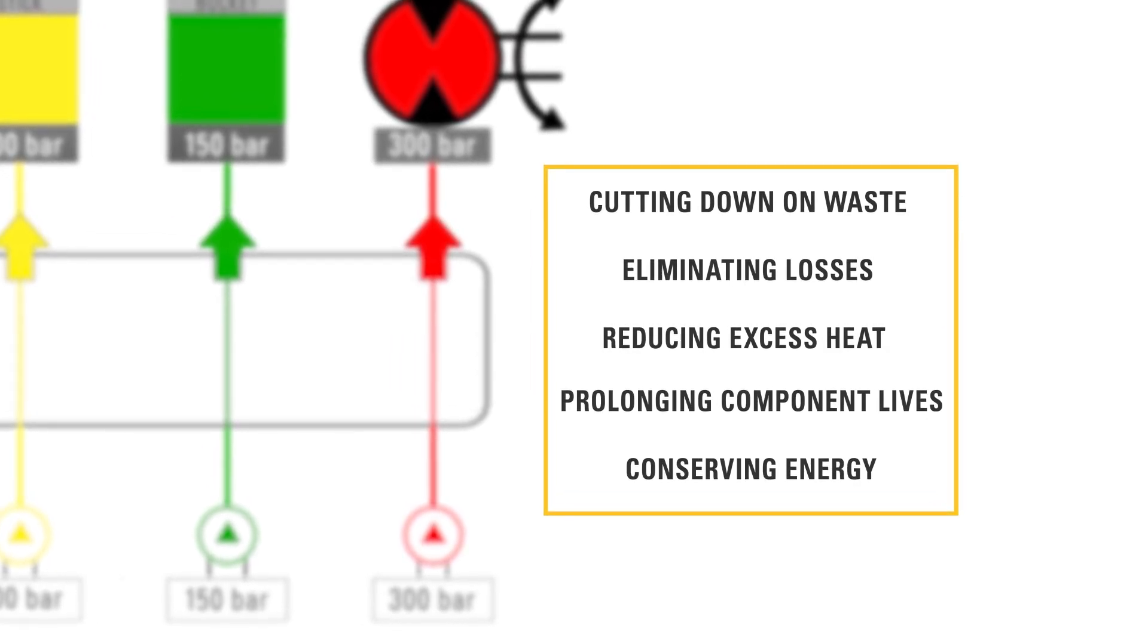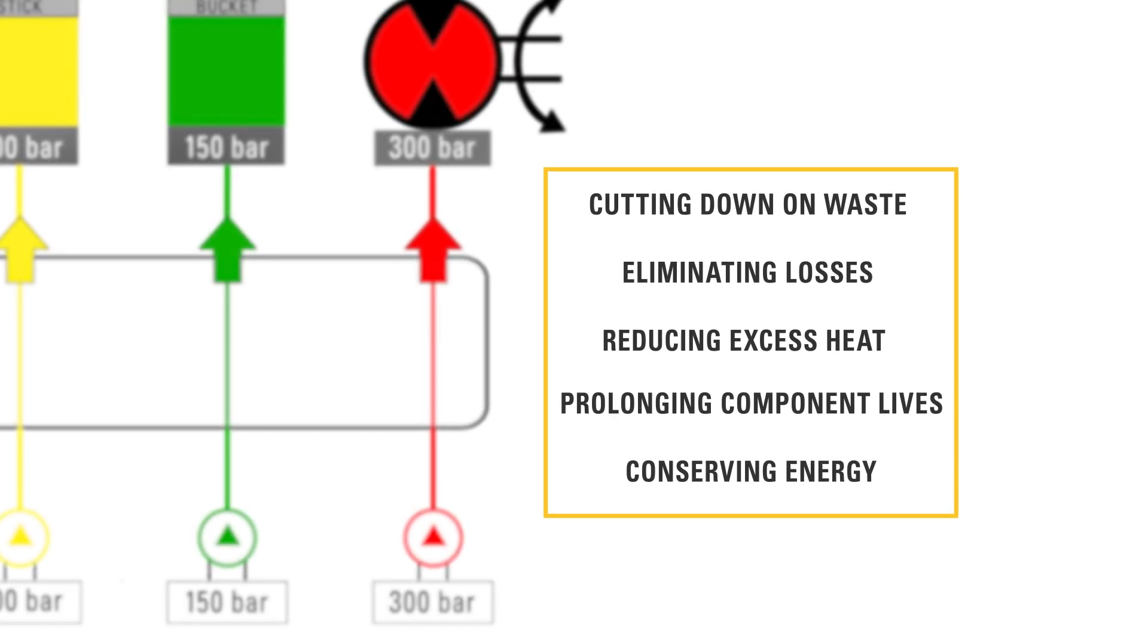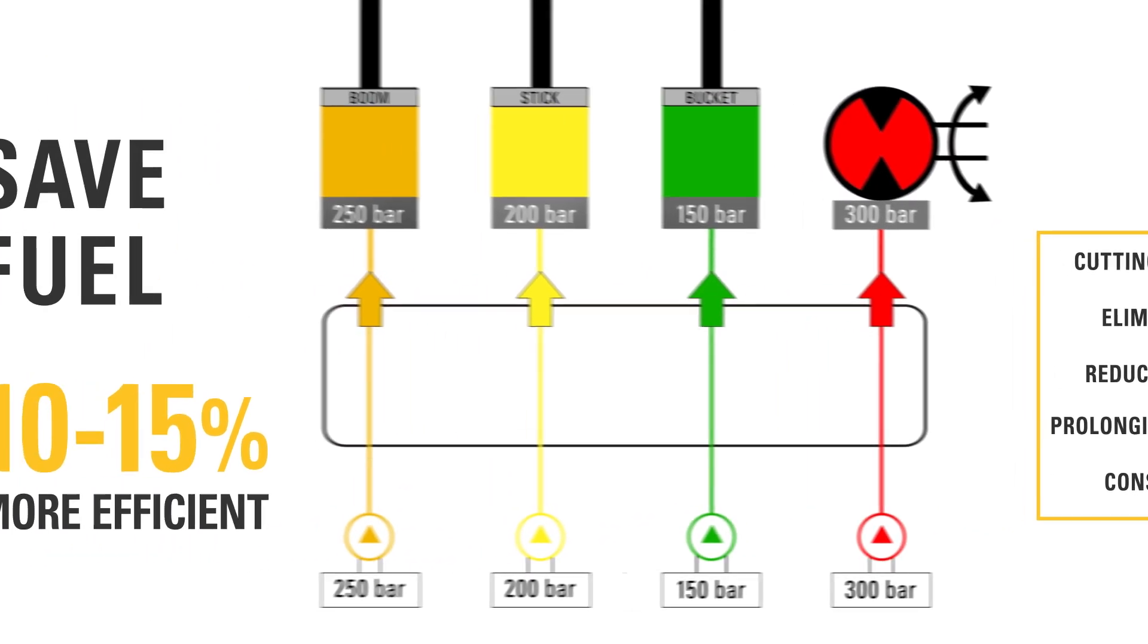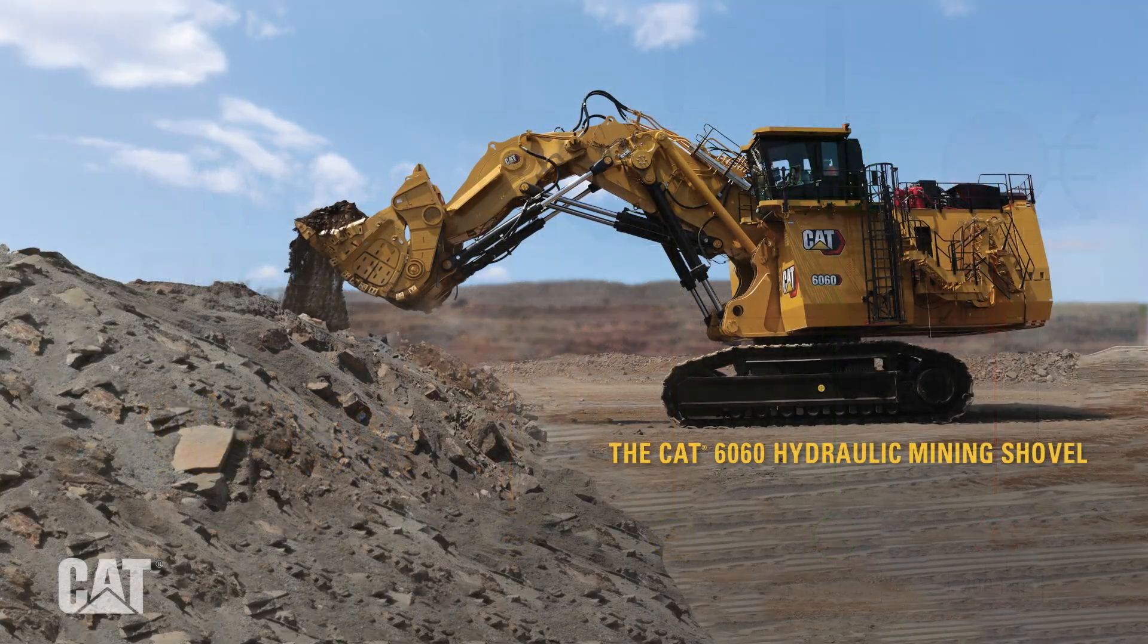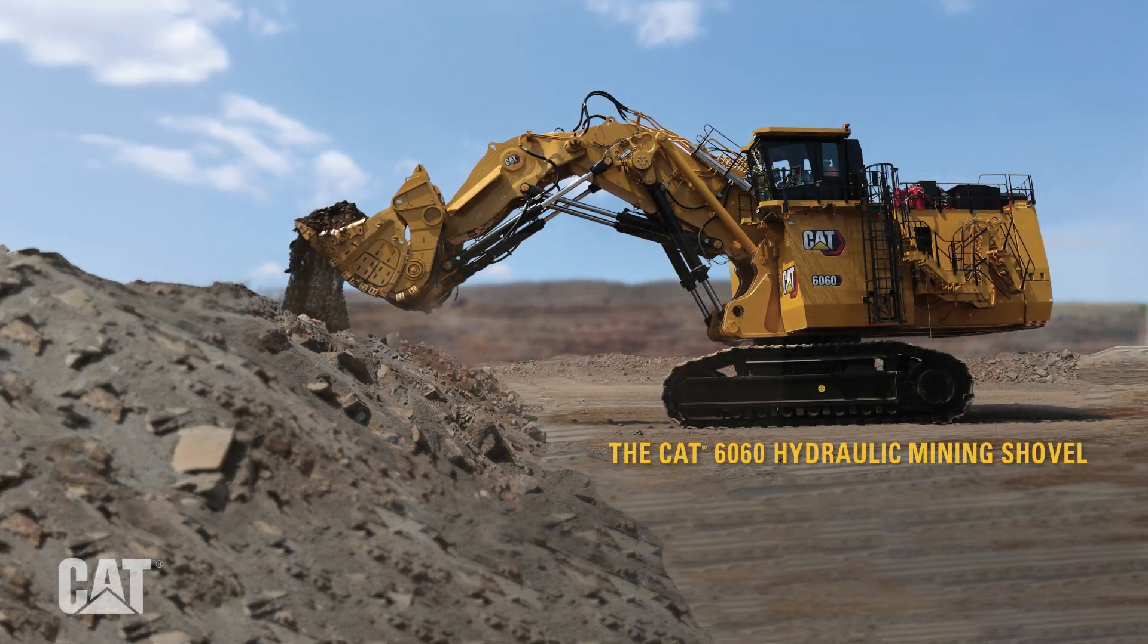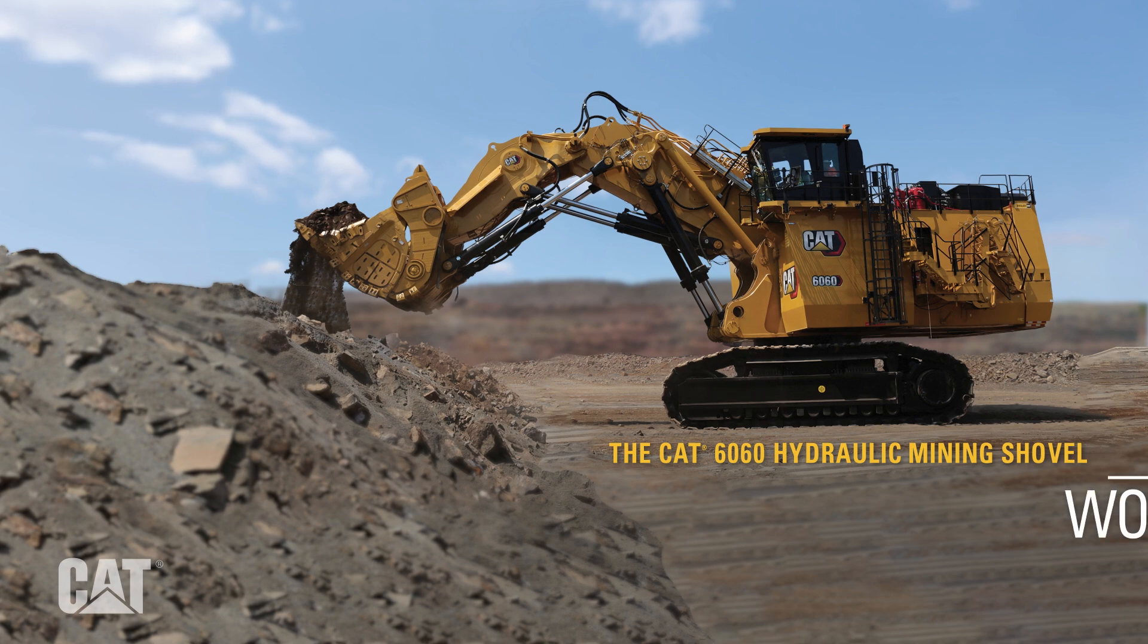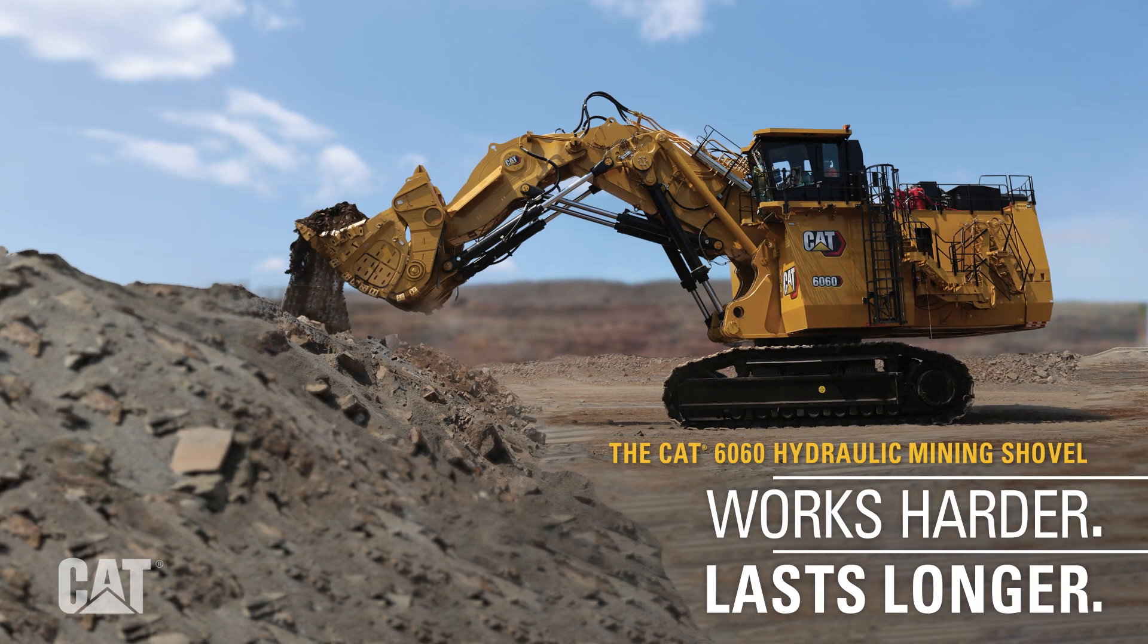Equipped with hydraulic optimization, next generation hydraulic mining shovels save fuel and are 10-15% more efficient. And that is just one reason our next generation CAT 6060 will work harder and last longer.